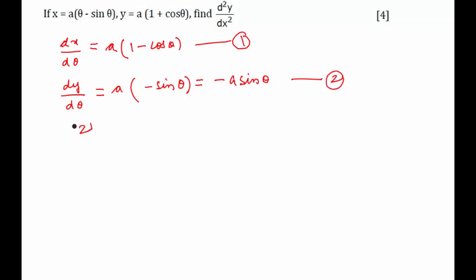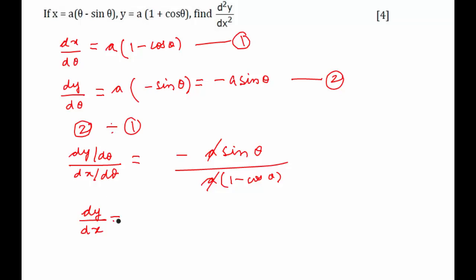Now when we divide these two equations, divide 2 by 1, we get dy/dθ upon dx/dθ equals minus a sin theta upon a times 1 minus cos theta. A and a get cancelled, and d theta d theta cancels, so dy/dx equals minus sin theta upon 1 minus cos theta.